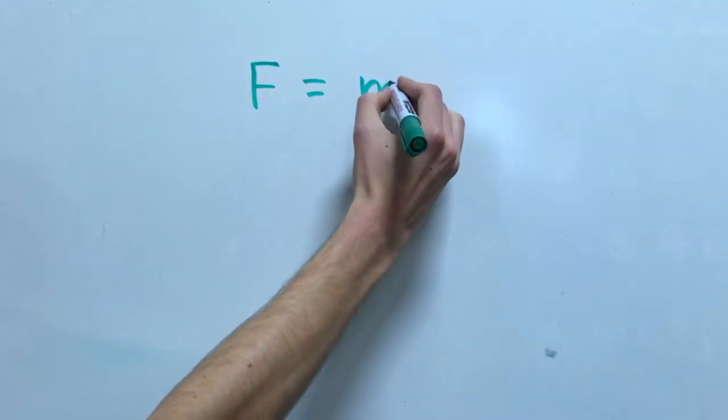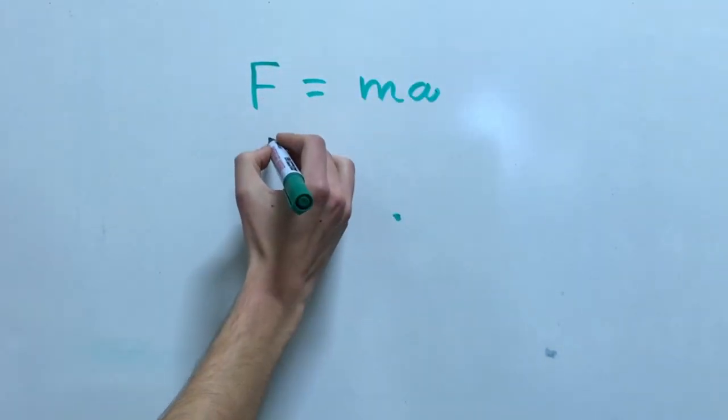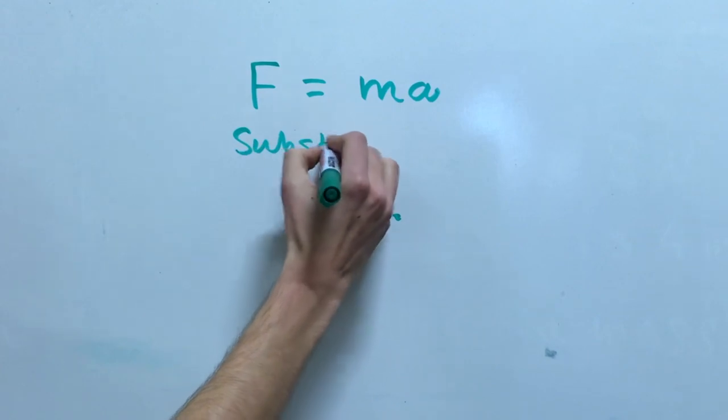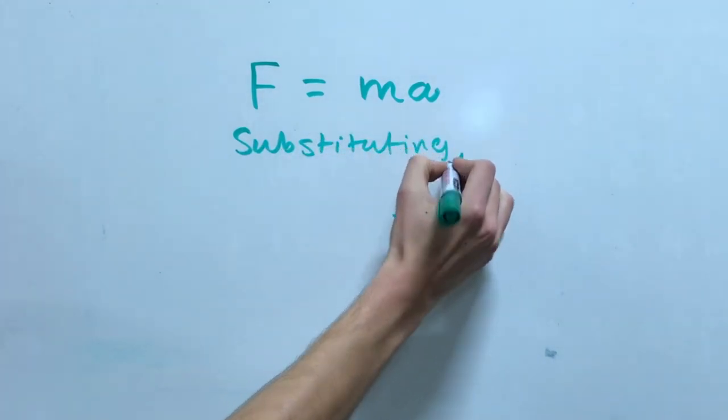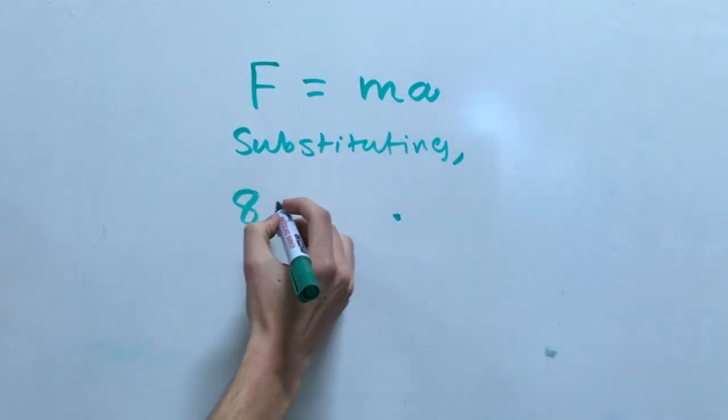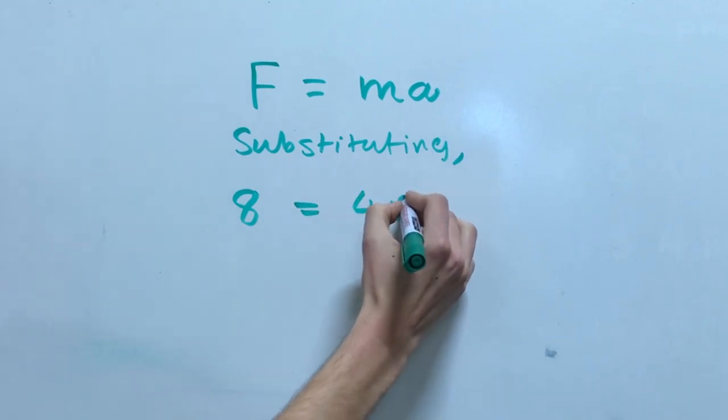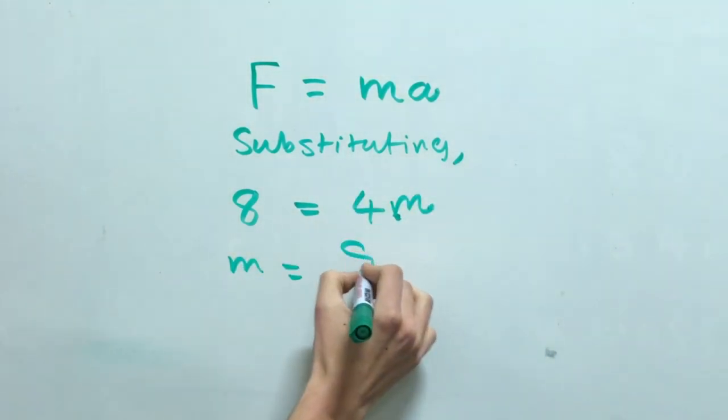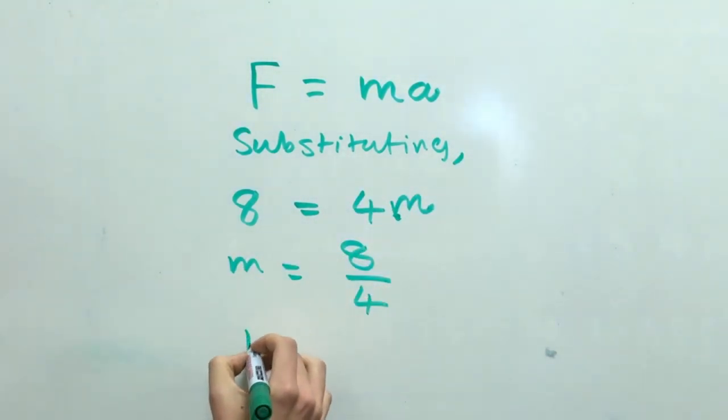Okay, so here is the answer. If the force is 8 newtons and the acceleration is 4 meters per second per second, then force over acceleration will equal mass. And so 8 over 4 equals 2 kilograms.